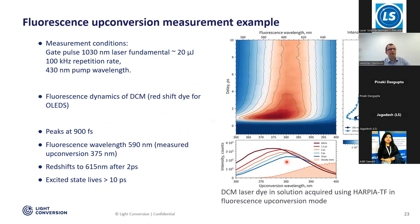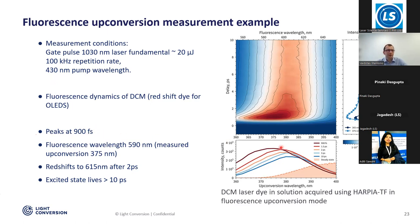Now let's see the same examples. DCM dye measured in the upconversion method. The gate pulse was 1030 nanometers — it's a terbium line. It requires about 20 microjoules of the fundamental, measured at 100 kilohertz, pumped at 430 nm. Instead of seeing a peak at 100 picoseconds as with time-correlated single photon counting, we see it's actually two orders of magnitude shorter. It actually peaks at around 900 femtoseconds.